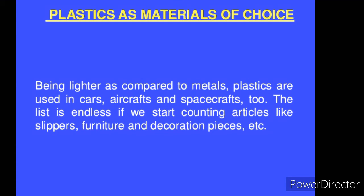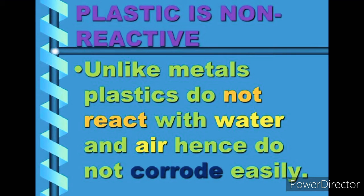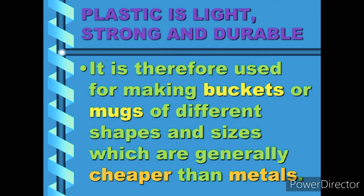The list is endless if we start counting articles like slippers, furniture, decoration pieces, etc. Plastic is non-reactive — unlike iron, plastic does not react with air to form rust, which is why plastic has replaced iron from many articles. Plastic does not react with many chemicals, so plastic containers are used for keeping many materials and chemicals. Plastic is lightweight, strong, and durable — plastic chairs have replaced wooden chairs in most households, and wooden crates have been replaced by plastic crates for keeping milk and cold drinks. Most warehouses now use plastic pallets for keeping goods, and plastics are generally cheaper than metals.